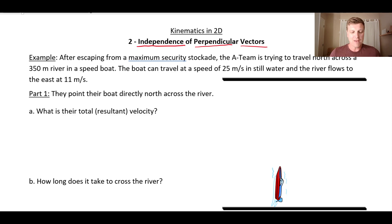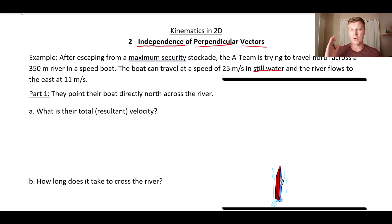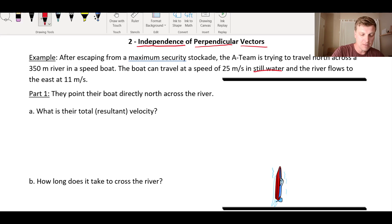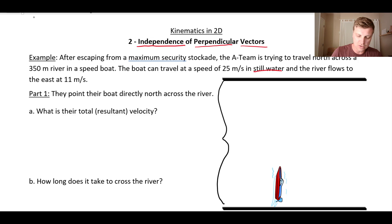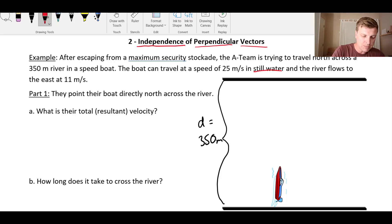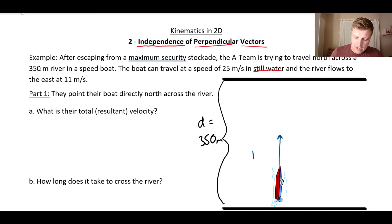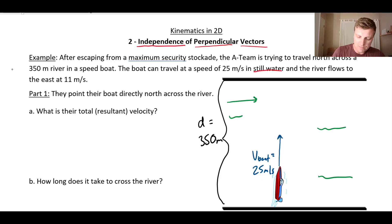We'll take an example. After escaping from a maximum security stockade, the A-team is trying to travel north across a river in a speedboat. The boat can travel at 25 meters per second in still water — if there's no current, it can go 25 m/s in whatever direction they point it. But there's a river flowing to the east at 11 meters per second. The river is 350 meters wide. The velocity of the boat, V-boat, is 25 m/s due north, and the river flows east at 11 m/s.